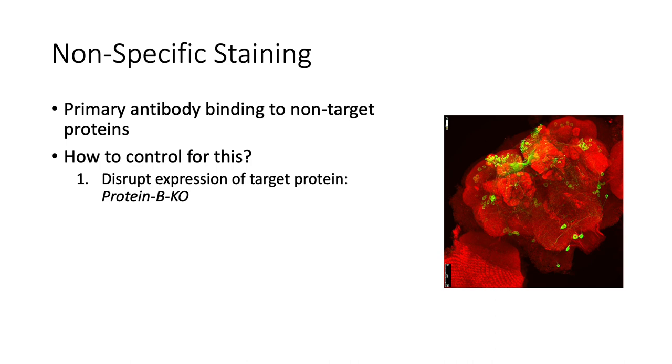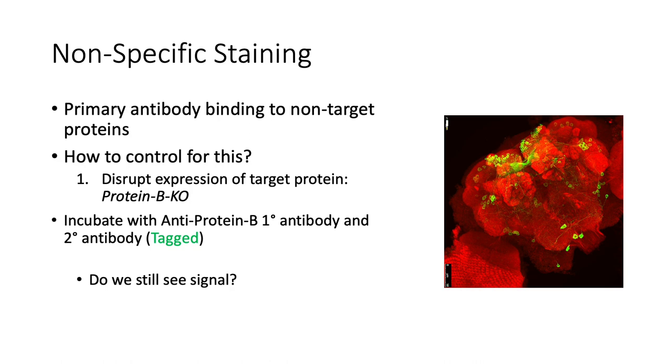After knocking out protein B, one can incubate with anti-protein B primary antibody and the green tag secondary antibody. And ask the following question: do we still see a signal?